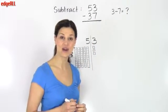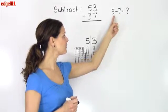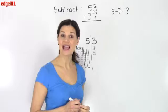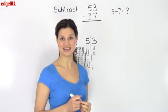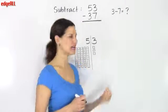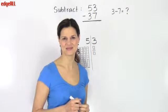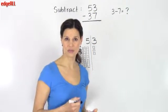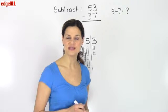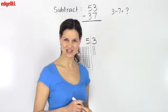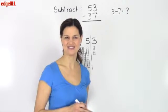I cannot subtract 7 from 3 and get a positive number. And I know that I cannot put a negative number in my ones place in an answer like this. And so to solve this problem, we need to do something called borrowing. So let's take a look at what borrowing involves.